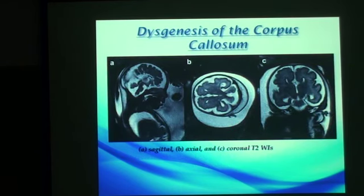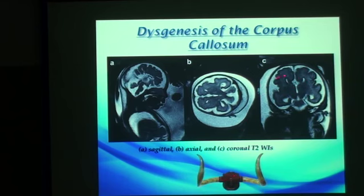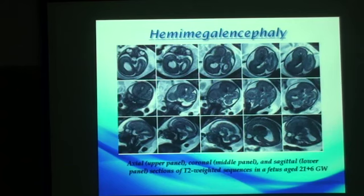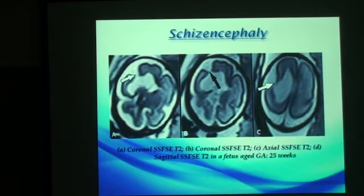Agenesis of the corpus callosum can be easily diagnosed by certain characteristic features. There is separation with no connection between the two cerebral hemispheres, a racing car horn appearance of the frontal horns, dilated occipital horns giving a colpocephalic configuration, and in the sagittal view only the rostrum is seen — indicating partial agenesis of the corpus callosum with absence of the body and splenium. In hemimegalencephaly, there is enlargement of one cerebral hemisphere with ipsilateral dilatation of the ventricles. In schizencephaly, there is a cleft connecting the subarachnoid space with the lateral ventricles; MRI helps to differentiate this from porencephalic cysts, as schizencephaly is lined by gray matter while porencephaly is lined by white matter.